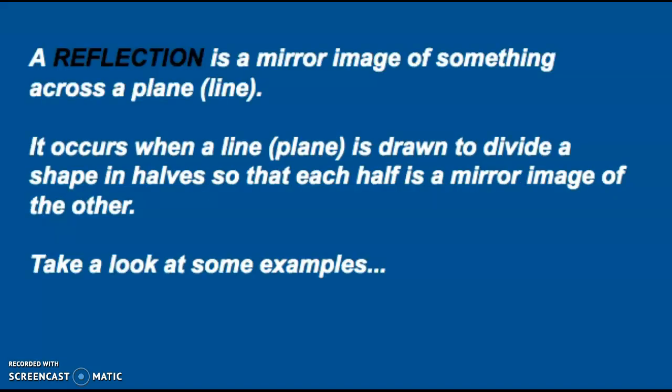A reflection is a mirror image of something across a plane or line. It occurs when a line or plane is drawn to divide a shape in halves so that each half is a mirror image of the other. Take a look at some examples.